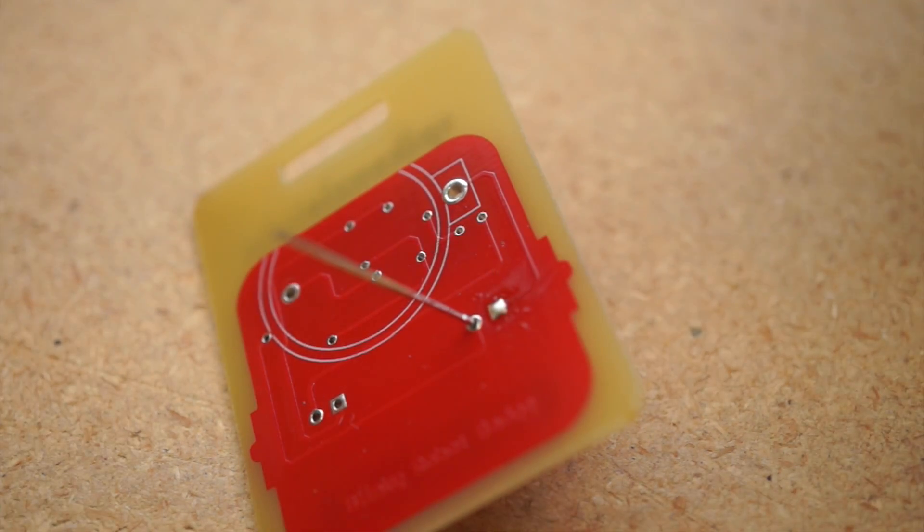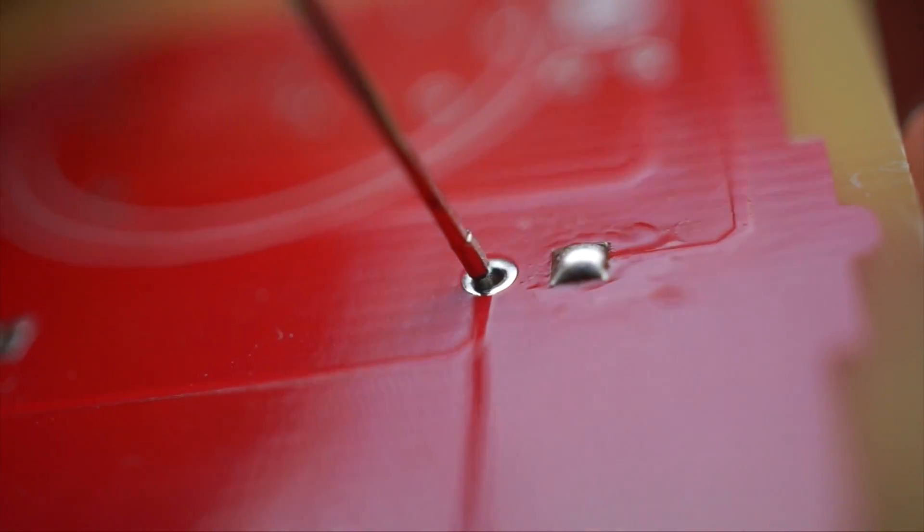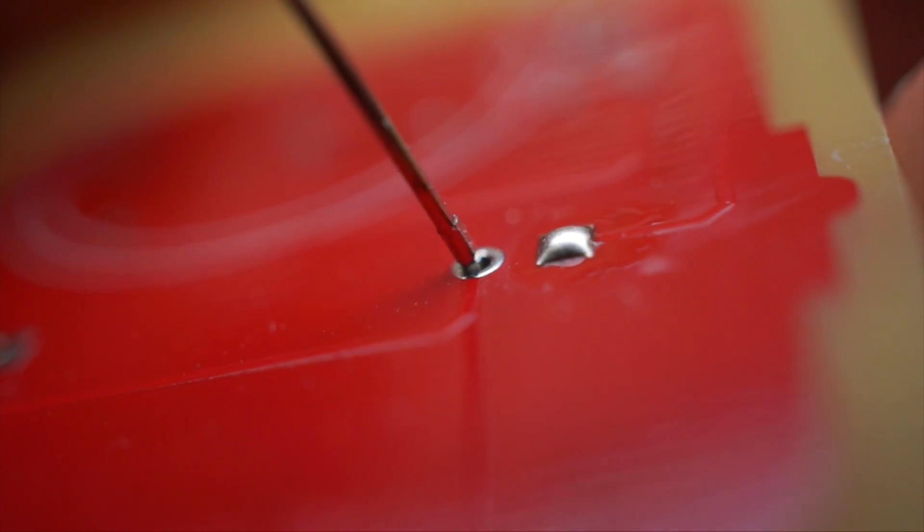It takes some practice, but if you get it right, you get a perfect little dome. Something about the surface tension of the new solder and the lack of any central element poking through makes this happen.